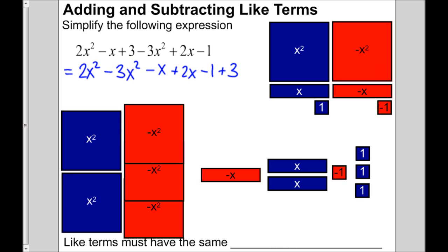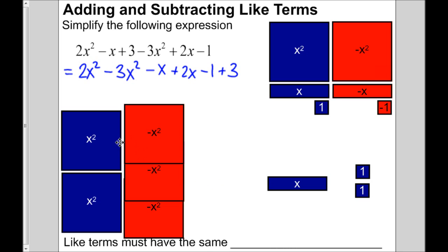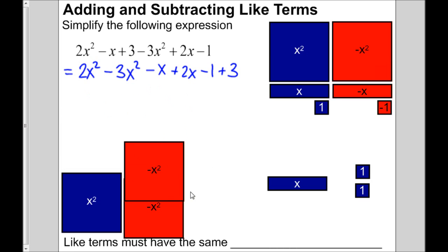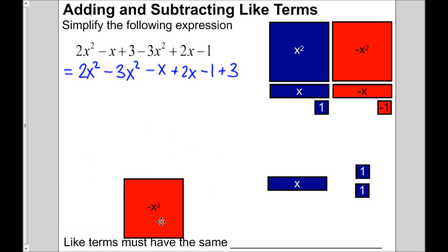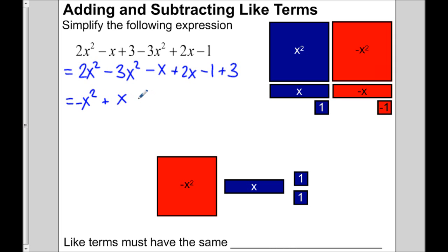We can use these tiles to help us understand the adding and subtracting. We have this 1 tile and this negative 1 tile — 1 take away 1 is 0, so they annihilate each other. Those are called zero pairs. Same thing happens with x take away x, and x squared minus x squared. So what we have left is negative x squared plus x plus 2.